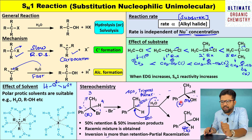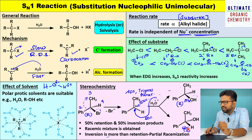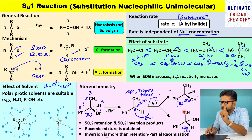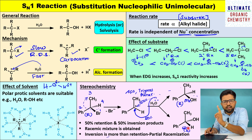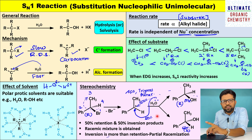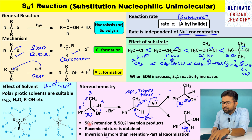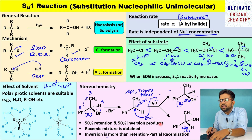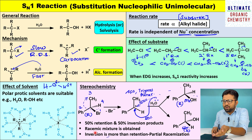This is known as retention of configuration. If you look at the other product — the S configuration — the reactant configuration was R and the product configuration is S, meaning the opposite configuration has formed. This is known as inversion of configuration. So 50% of retention product and 50% of inversion product will be observed in SN1 reaction — otherwise known as racemic mixture.